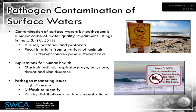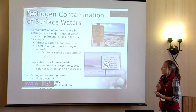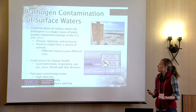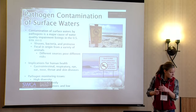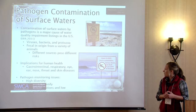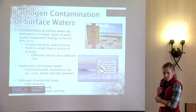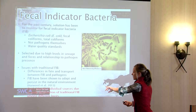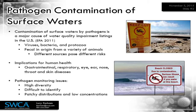I wanted to start by talking about pathogen contamination of surface waters. There will be some repetition between what Melissa and I are presenting, but repetition is a good thing — it really hammers it home. Contamination of surface waters by pathogens is a major cause of water quality impairment listings in the U.S. When we talk about pathogens, we're referring to viruses, bacteria, and protozoa — they're fecal in origin and sourced from a variety of animals. Implications for human health include gastrointestinal, respiratory, eye, ear, nose, throat, and skin diseases.